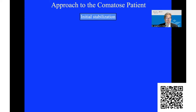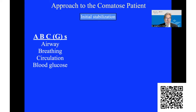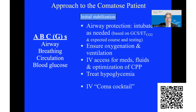As an emergency physician, the first thing I think about is the ABCs: airway, breathing, circulation. And I add G — the blood glucose — because that should be checked in any patient with an altered mental status every single time. Airway protection: if the patient needs it, one would intubate to control their airway and maintain ventilation and oxygenation. Sometimes one will need to intubate simply to get imaging studies in a comatose patient. IV access will obviously be important for medications, fluids, and optimization of the CPP — the cerebral perfusion pressure.